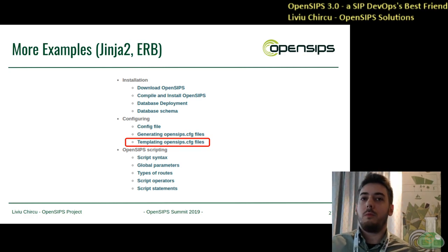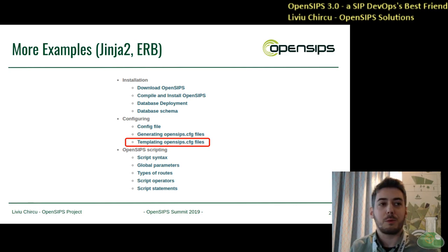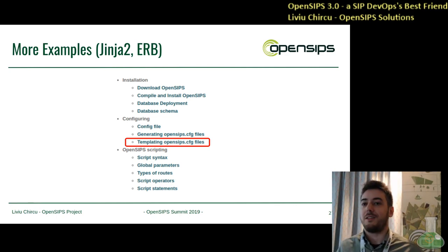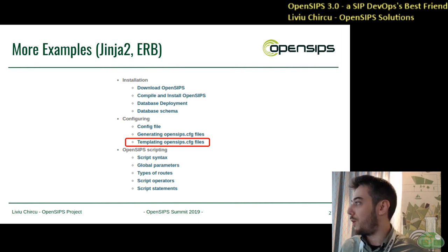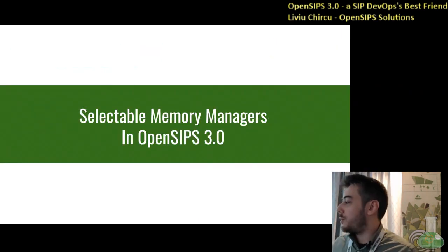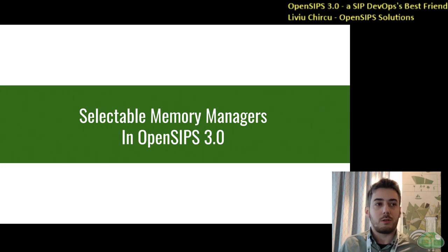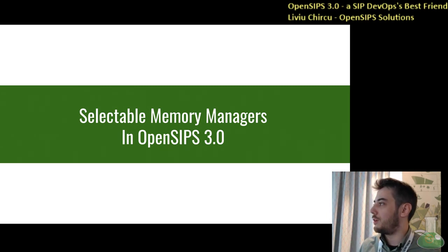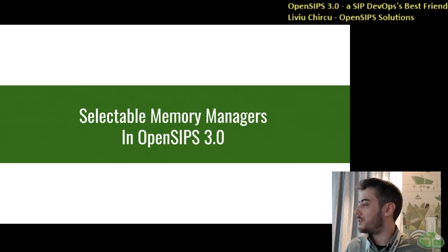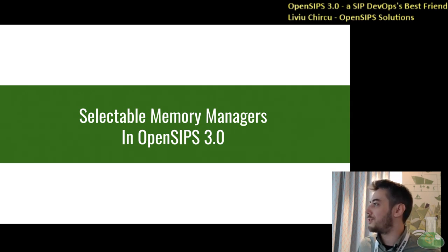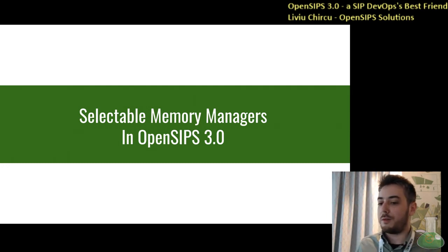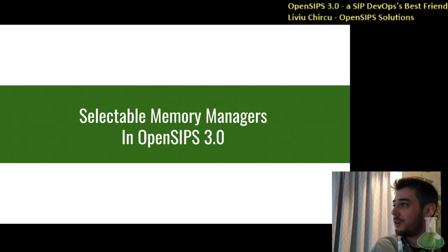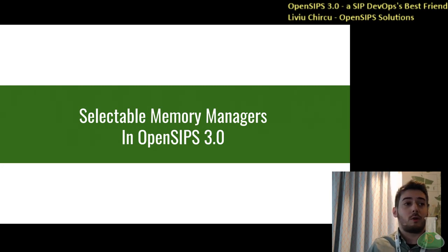Moving on to a different section of the DevOps process — testing and QA platforms. We've worked a bit on the memory allocator support, and I'm going to go into a little bit of description of how it works, because I don't see this being talked about too often. I thought it was a good occasion to go into a bit more detail here about how the OpenSIPS memory managers work, what we can expect out of each of them, and how we can make the best selection for our use case.